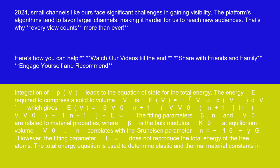The fitting parameters beta, N, and V0 are related to material properties, where beta is the bulk modulus K0 at equilibrium volume V0. N correlates with the Grüneisen parameter N equals minus 1.6 minus gamma G.